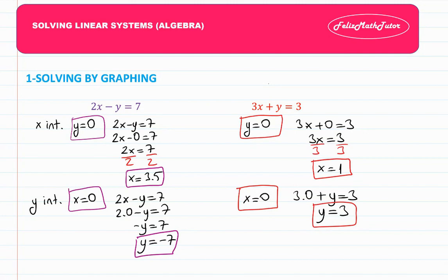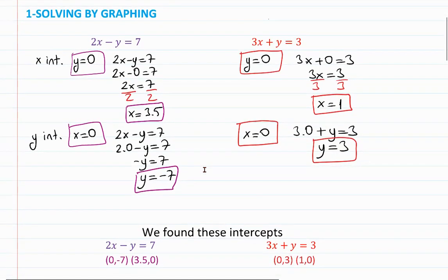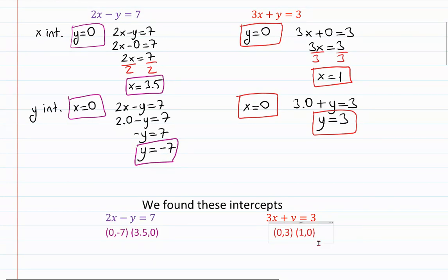As you can see, we found intercepts for both equations. For the purple equation: (0, -7) and (3.5, 0). For the red equation 3x plus y equals 3: (0, 3) and (1, 0).